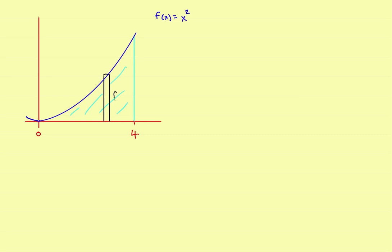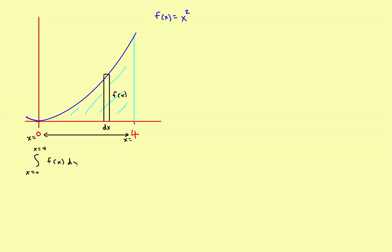The height of that rectangle is f(x), and the width of that rectangle is dx. When you set up your integral, you're going to integrate from x equals 0 to x equals 4, so everything is in terms of x. The limits go from here across to here, and the integral will be the integral from x equals 0 to x equals 4 of f(x) dx.